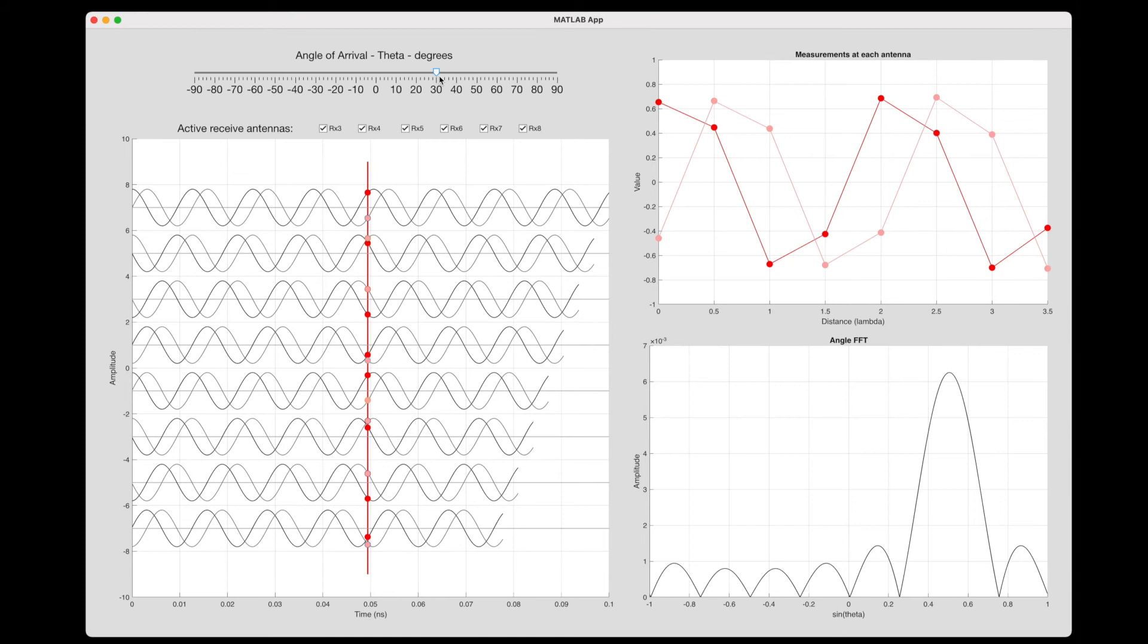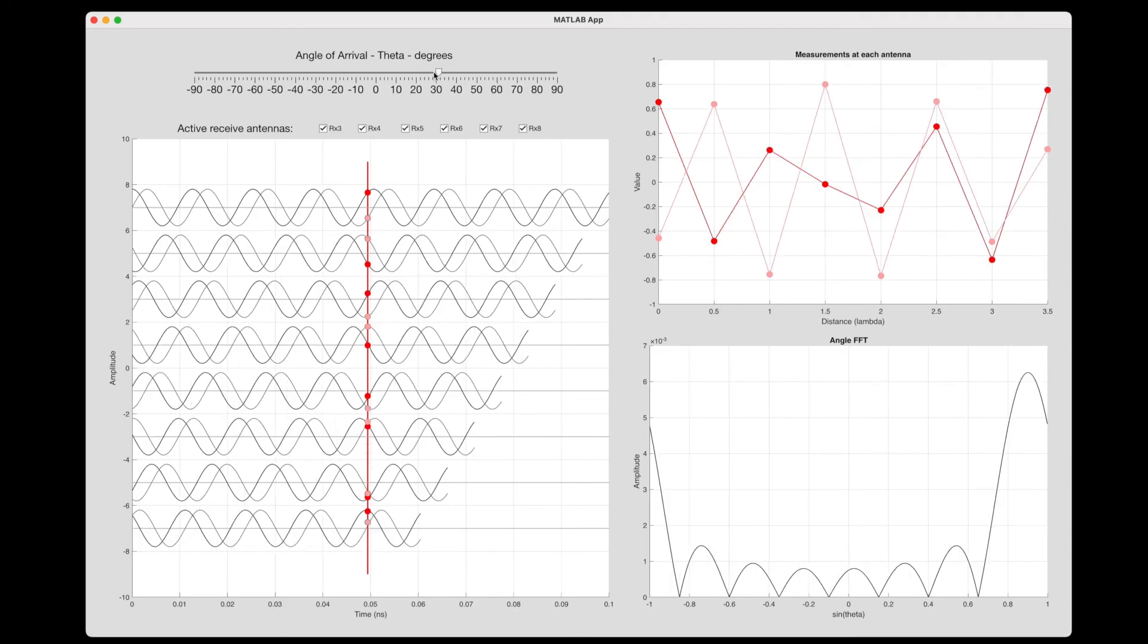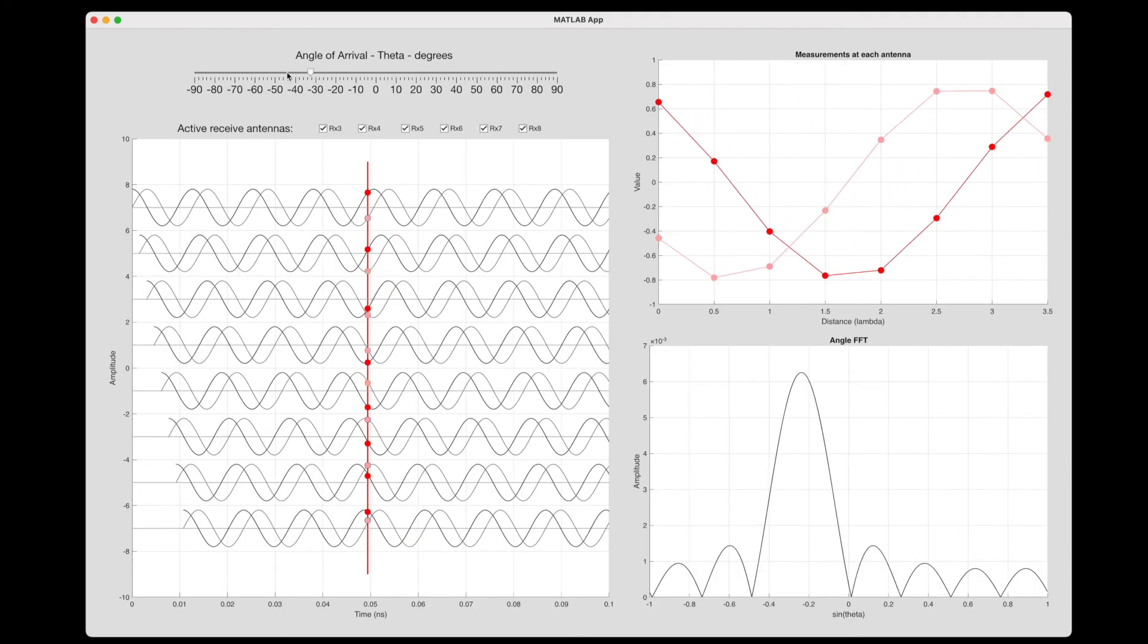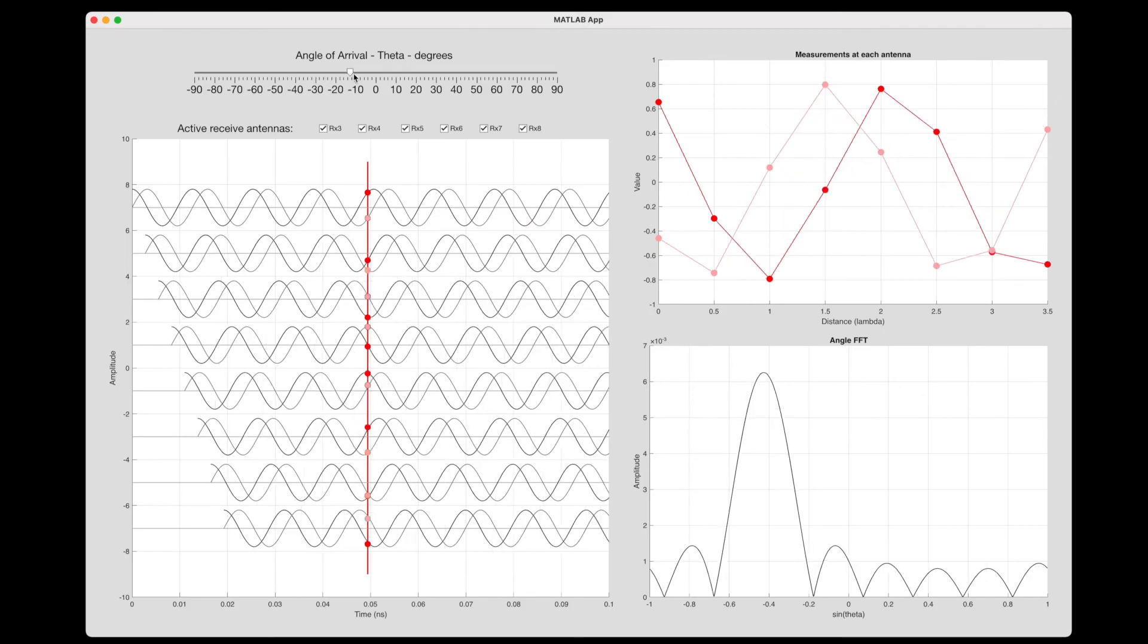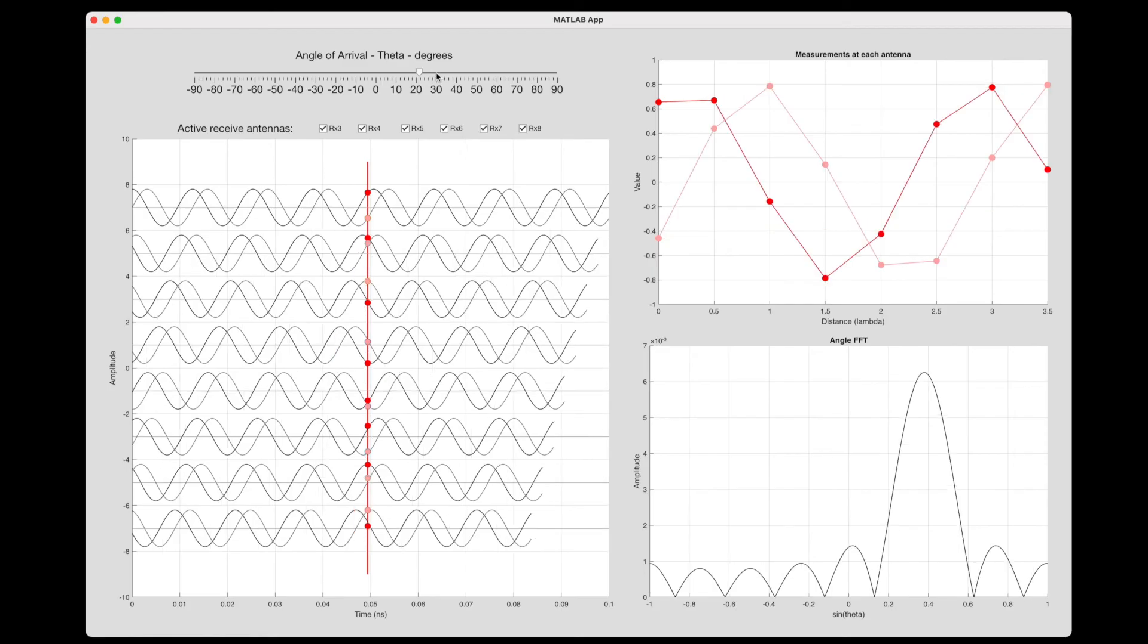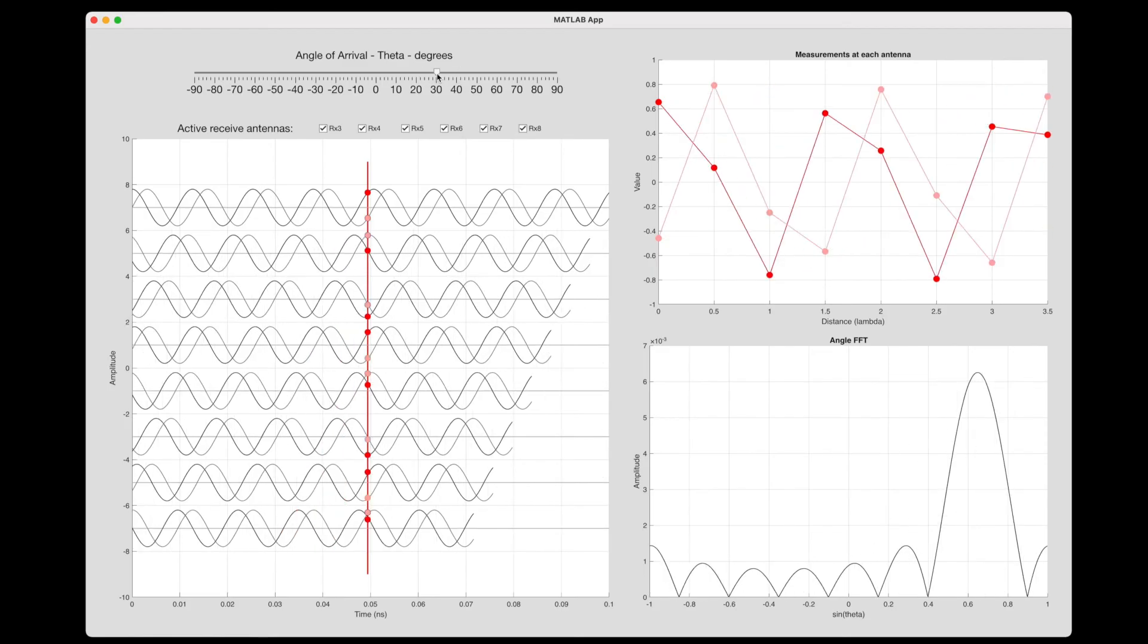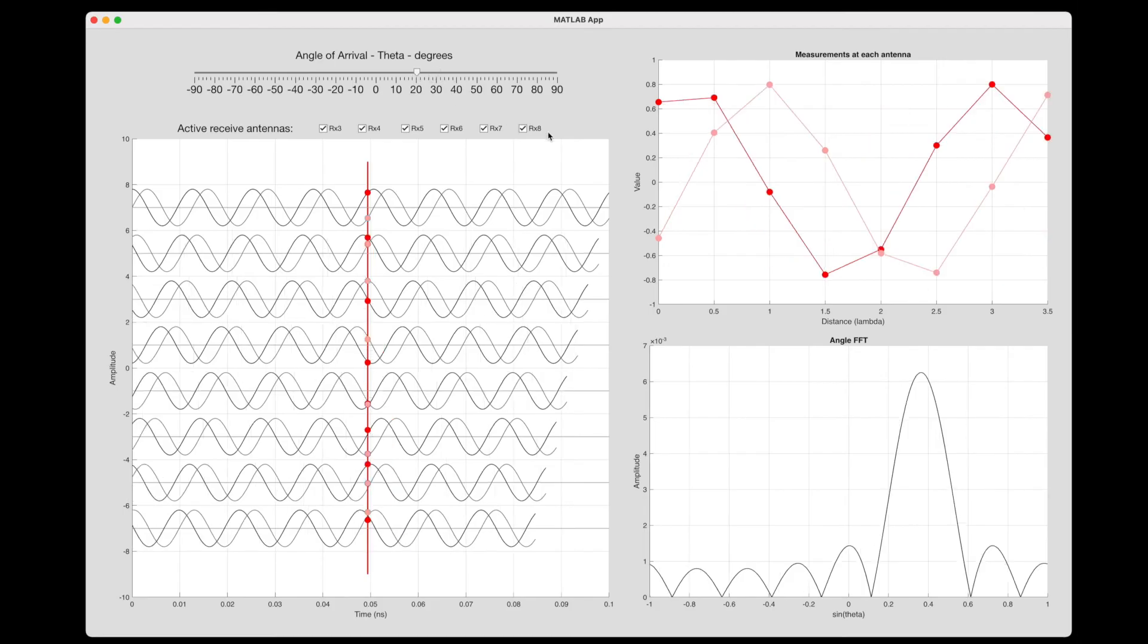And since we're dealing with IQ signals, which means a real and imaginary component, we can determine whether the angle is positive or if it's negative. And this is analogous to what we did in the last video, where we were only able to tell velocity direction when we had two IQ signals. If we only had a real stage on this radar, then we would only be able to tell the magnitude of the angle and not the sine.